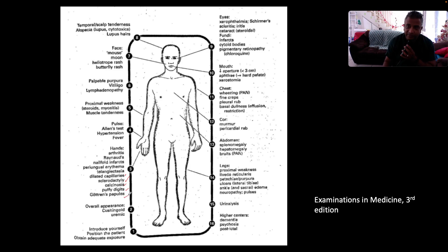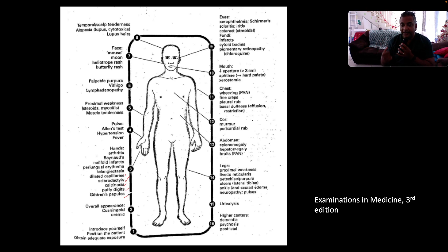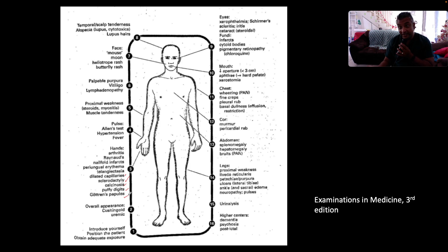Remember that systemic lupus erythematosus may overlap with other rheumatological and connective tissue conditions, like systemic sclerosis or rheumatoid arthritis. When lupus overlaps with rheumatoid arthritis, we call that 'Rupus'.